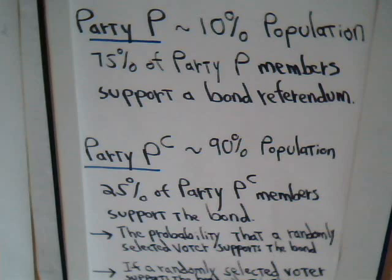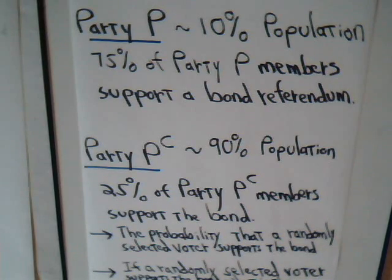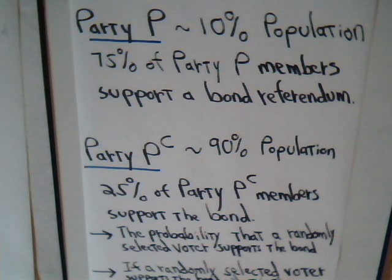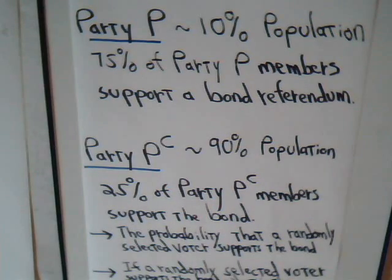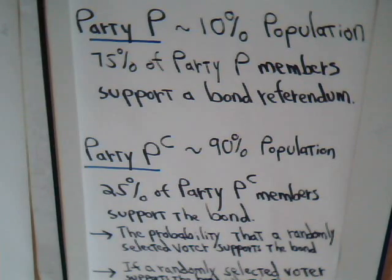In a community there's a political party, we'll call it Party P, and it's supported by 10% of the population. 75% of these members support a local bond referendum. The opposition party, which we can designate as the complement to Party P, is supported by 90% of the population, and 25% of its members support the bond referendum.